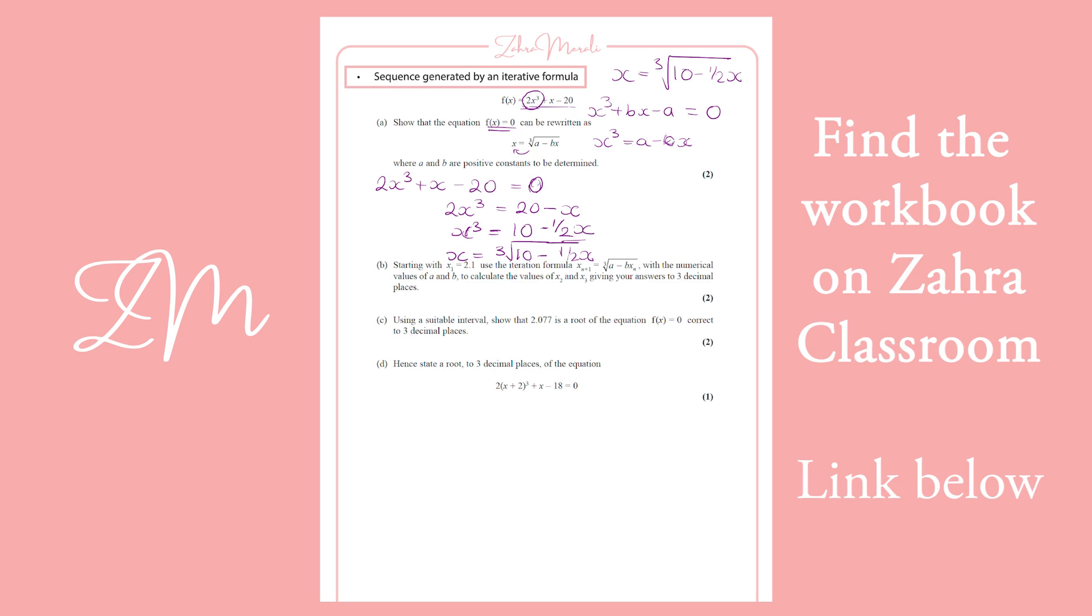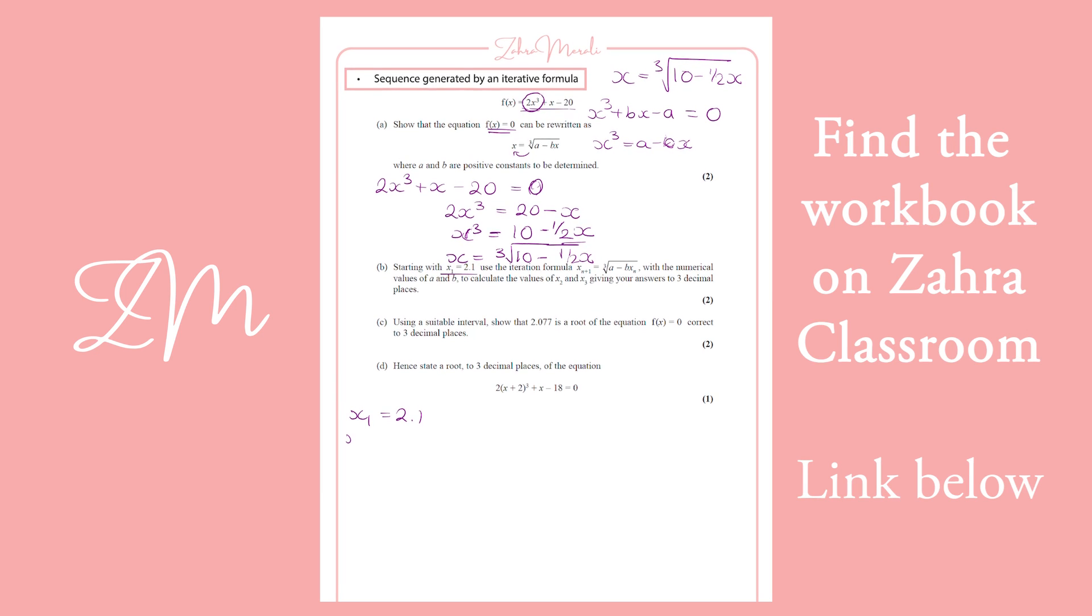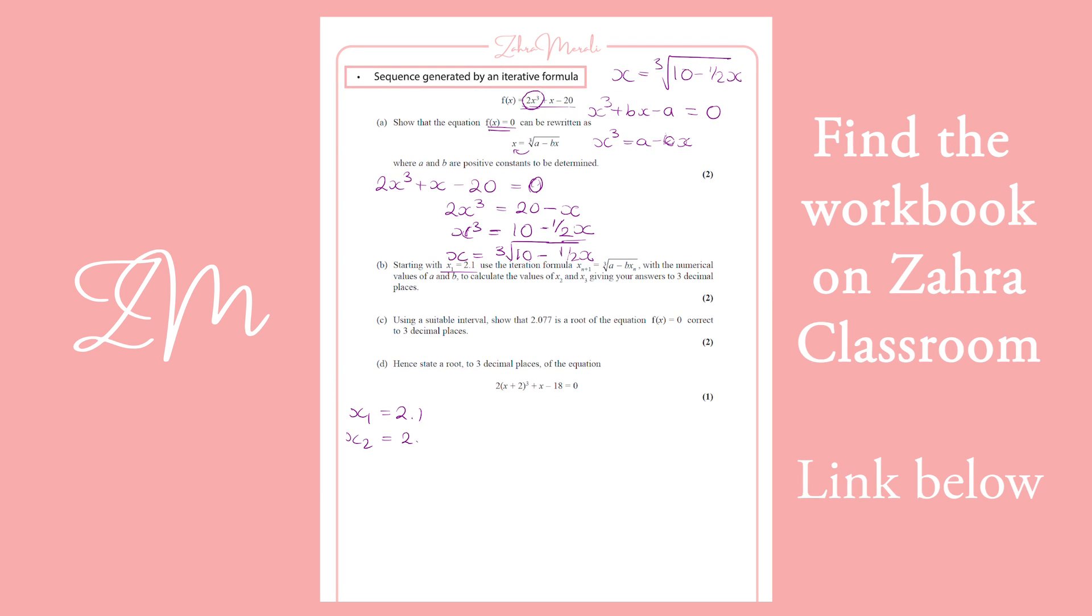we can see that we're going to use this 2.1 as our first one. So in our calculators, 2.1 equals, it's now stored as your answer. Then you're going to do the cube root of 10 minus a half times answer. And then you can just hit equals as many times as you need to. And in this case, we want two more.